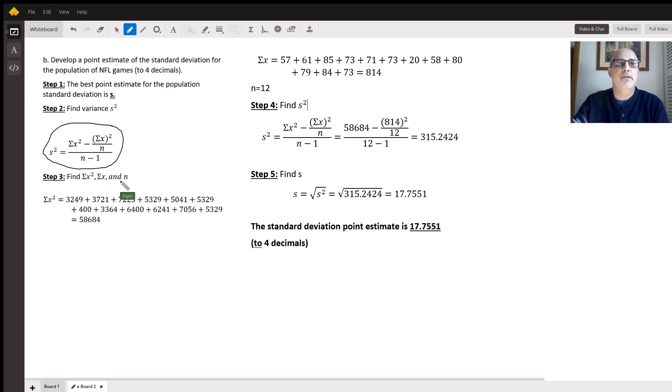I'm going to find the three different parts that I need: the sum of x squared, the sum of x, and n. The sum of x squared - we take each data point, square it, and add them up. So the sum of x squared in this case is 58,604. The next part is the sum of x. We just calculated that in Part A, and that's 814. We also found that n is 12. So I have these three parts, and I look at the formula and drop in the parts that I have.